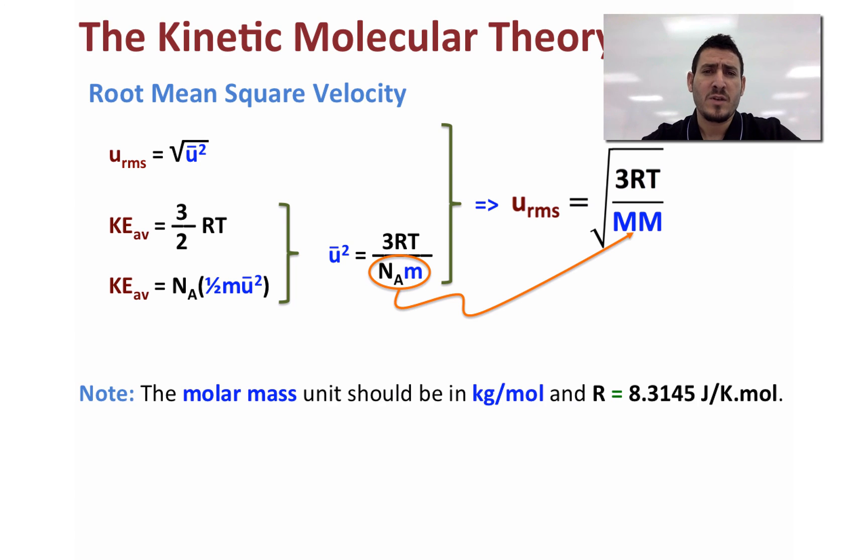So note that in this expression, the molar mass should be expressed in kilogram per mole, and R should be in the unit of joule per kelvin mole, and it's equal to 8.3145 joule per kelvin mole.